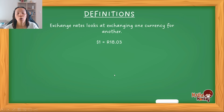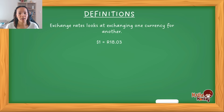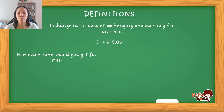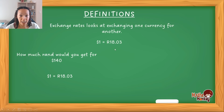Let's say at this moment the exchange rate between the American Dollar and the South African Rand is $1 for 18 Rand 3 cents. What this means is, in order for me to buy one unit of their currency, it's going to cost me 18 Rand 3 cents in my currency. So, let's say we were interested in finding out how much Rand you would get for $140. In other words, somebody comes from America with $140 and wants to exchange that for South African Rand. Whenever you're doing an exchange rate question, always start with the exchange rate that is given in the question — so $1 is equal to 18 Rand 3 cents.